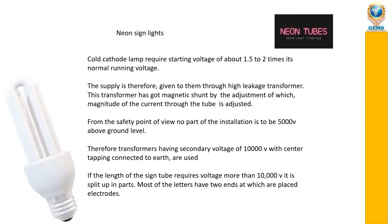If the length of the sign tube requires a voltage of more than 10,000 volts, it is split into parts, since above ground level only up to 5000 volts can be used. Each letter in a neon sign has two ends, and these two ends are connected to the electrodes, meaning each letter has two electrodes.